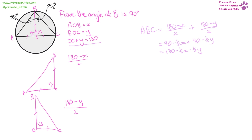We know from before that X plus Y is 180, so half X plus half Y equals 90. Replacing that term, we factorise to get 180 minus (half X plus half Y), which is 180 minus 90, and that equals 90 degrees. And that is the angle at B.